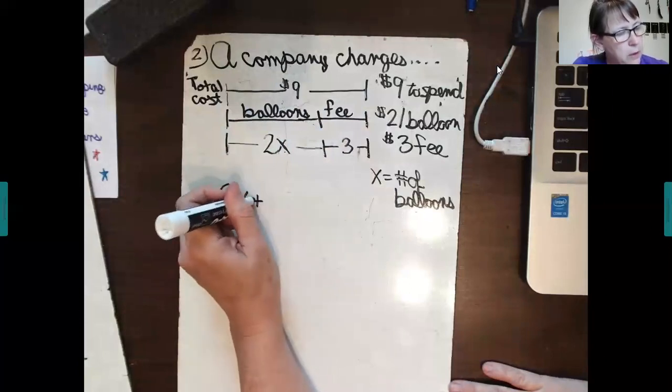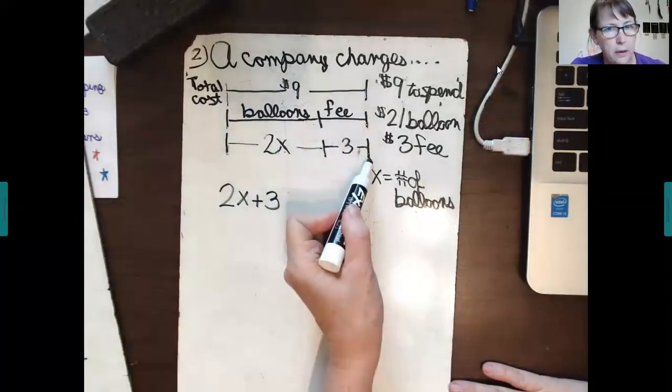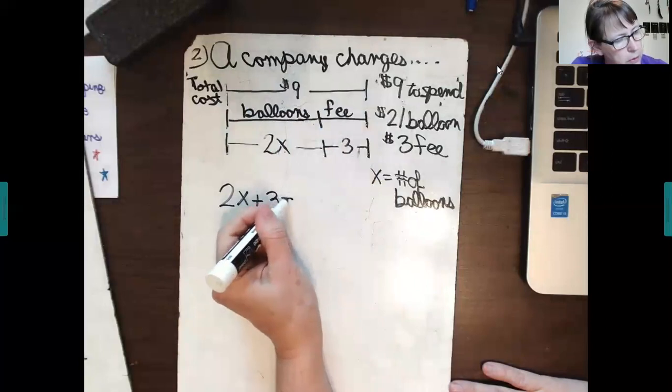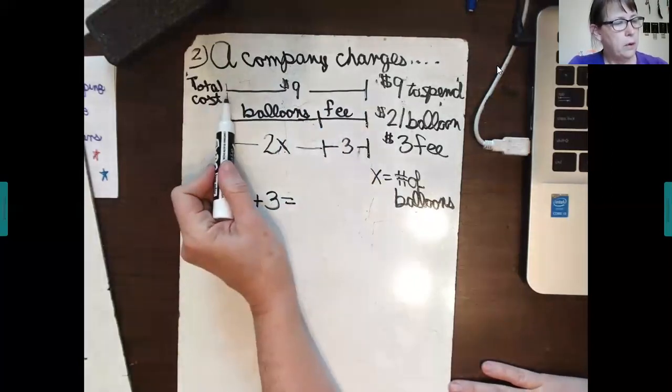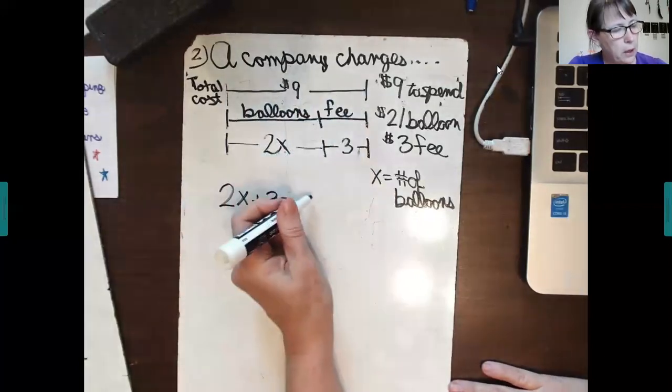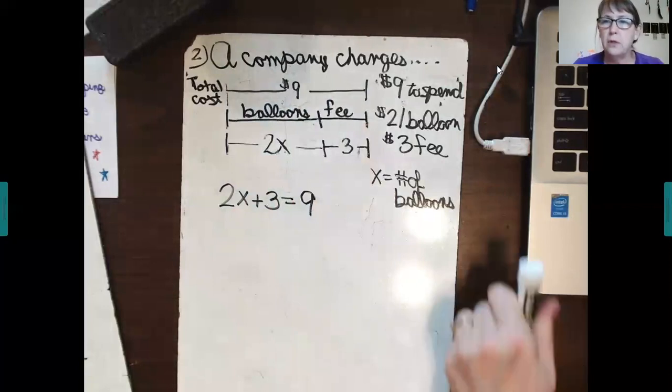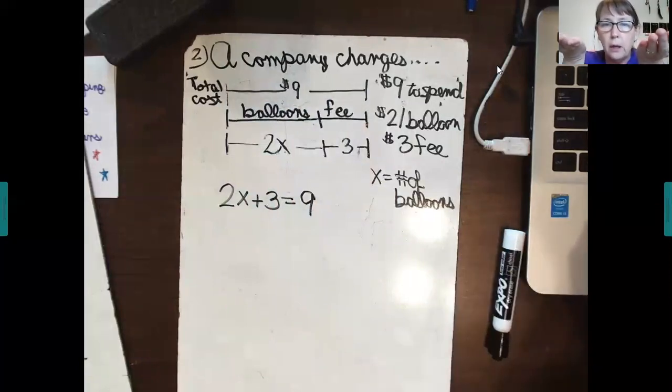So, I can set up an equation right here, 2X plus 3. That's one quantity. So, this represents a quantity. Equals, and I've got another quantity, another bar here, goes from here to here. That's my other quantity. Remember the essential question for this chapter? What does it mean to say that two quantities are equal?